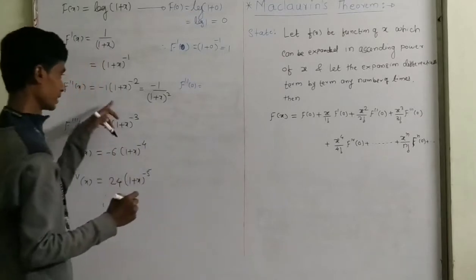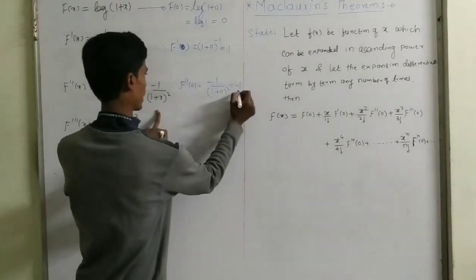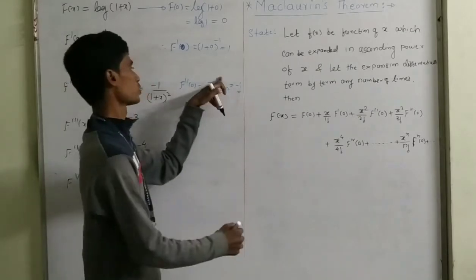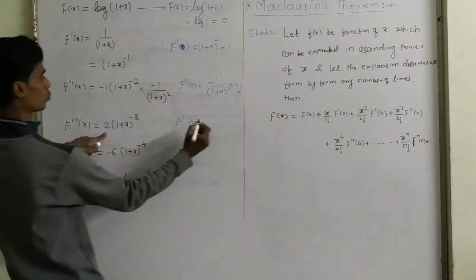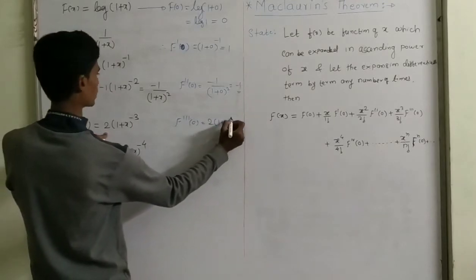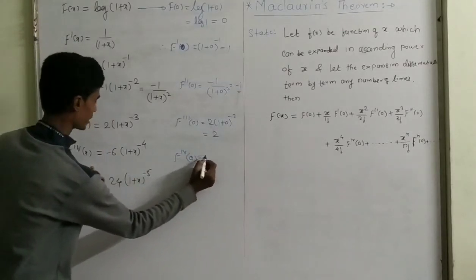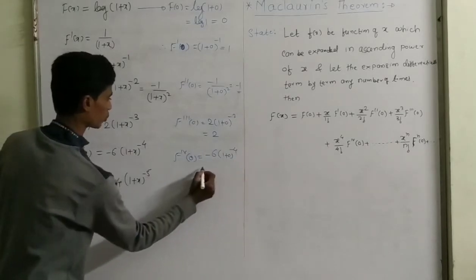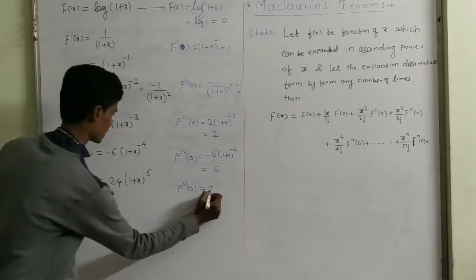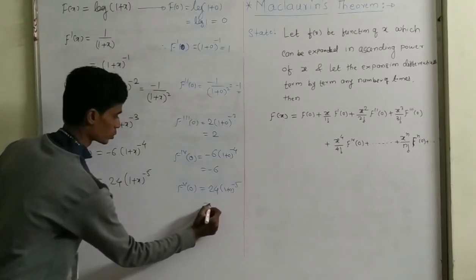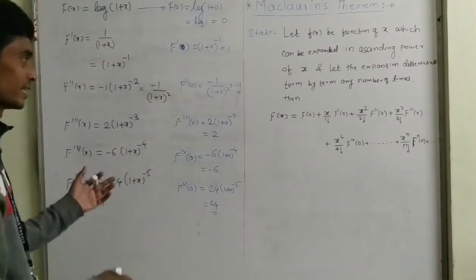Now f''(0): putting x = 0 gives minus 1/(1+0)² = minus 1/1 = minus 1. Now f'''(0): it is 2 times (1+0)^(-3) = 2. For the fourth derivative at 0: it is minus 6 times (1+0)^(-4) = minus 6. For the fifth derivative at 0: it is 24 times (1+0)^(-5) = 24. And the sixth derivative gives 24 times minus 5 = minus 120, and so on.